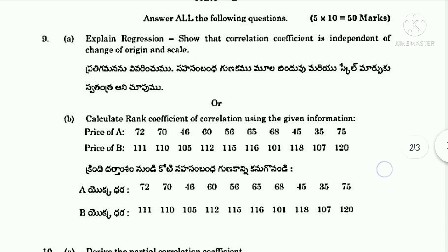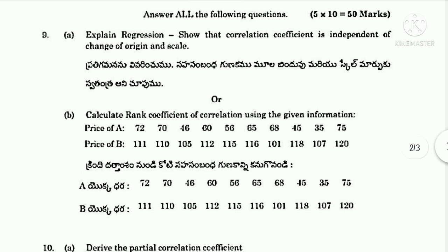Or Ninth B: Calculate rank coefficient of correlation using the given information. Price of A: 72, 70, 46, 60, 56, 65, 68, 45, 35, 75. Price of B: 1.11, 1.10, 1.5, 1.12, 1.13, 1.16, 1.01, 1.18, 1.07, and 1.20.